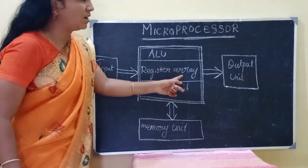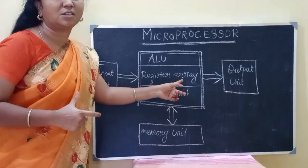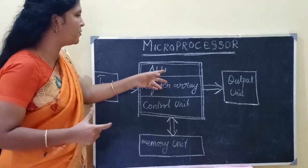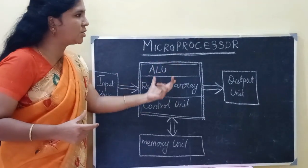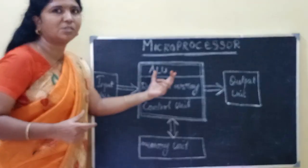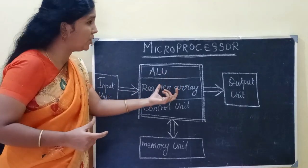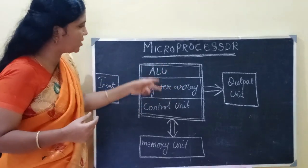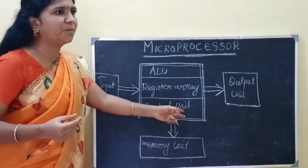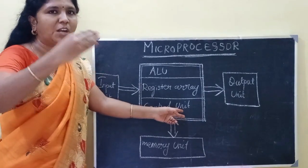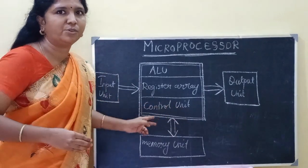Data is temporarily stored so that processing is very fast. Temporary registers are very fast so that data movement is very fast. Then there is the Control Unit, which manages what to do and how to do it.